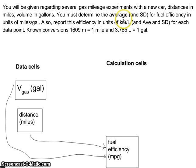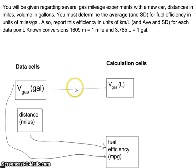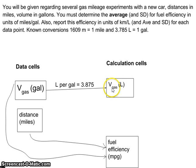Next, I've got to get the efficiency in units of kilometers per liter — that's a distance per amount. I have my distance in miles and need it in kilometers. I have my volume in gallons and need it in liters. There's my conversion factor: liters to gallons. I can convert gallons into liters — if I know the number of gallons, I can calculate the number of liters using the conversion factor.